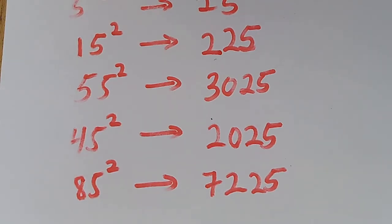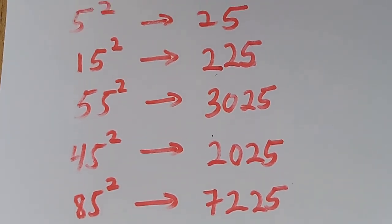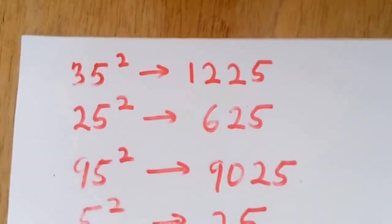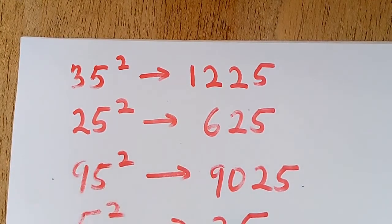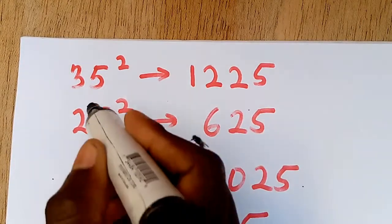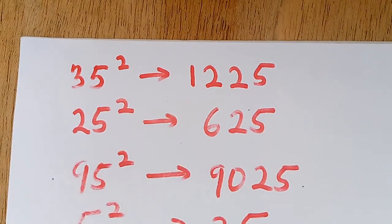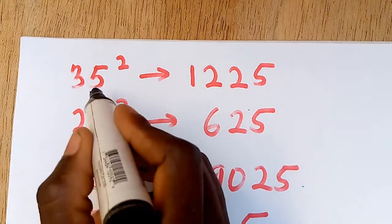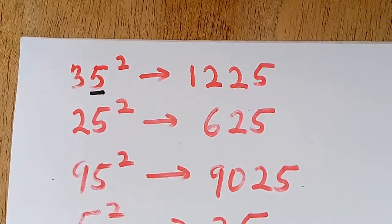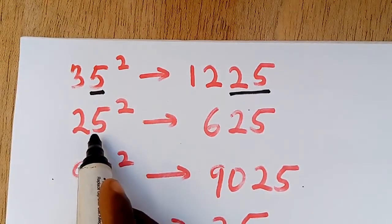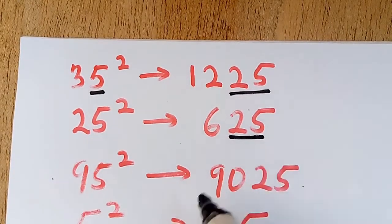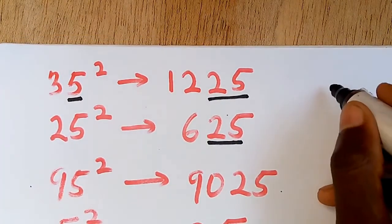Here's what I was using to solve these and come up with the answers within a very short time. Let's tackle the first question: 35 squared. Every number ending with five — note this — whenever you find the square of a number ending in five, the last two digits of the result will always be 25. So for 35 squared, you write 25 at the end.